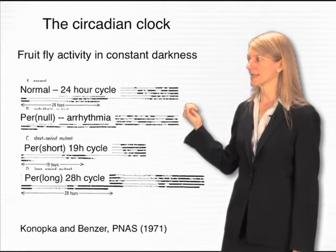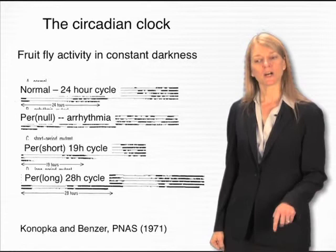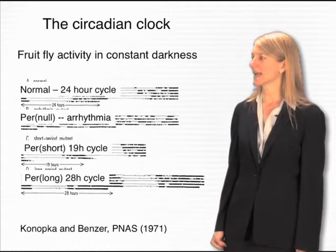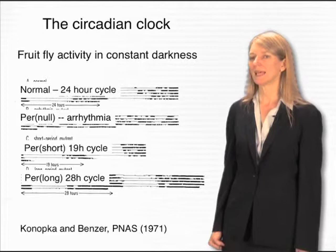Interestingly, if you change a fruit fly from light-dark cycles into constant darkness, you see that it still follows a 24-hour rhythm. It moves around for about 12 hours and then rests for about 12 hours. This indicates that it has an internal biological rhythm, which is called the circadian clock.